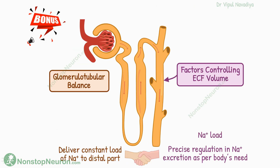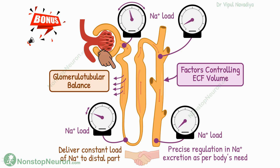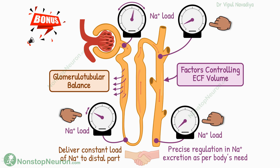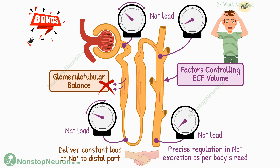Before we finish, here is a bonus point about the importance of glomerulotubular balance. The sodium load fluctuates greatly at the very beginning of the tubule due to highly varying GFR. However, the glomerulotubular balance adjusts the rate of absorption in the proximal tubule based on how much sodium is coming in, balancing out fluctuations for the later portion. The later portion then gets a relatively constant amount of sodium. The factors controlling ECF volume can then do a precise regulation of sodium reabsorption as per the body's need. Without the glomerulotubular balance, fluctuations would be so great that these factors would not be able to do their job effectively.